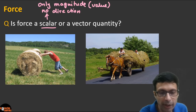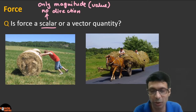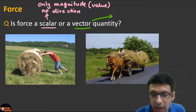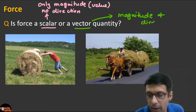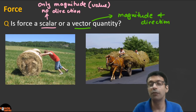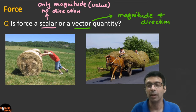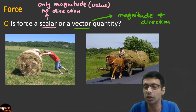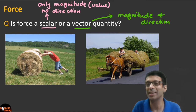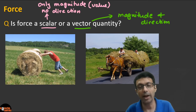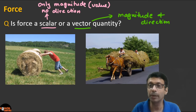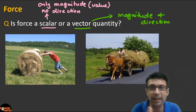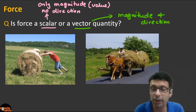A vector quantity has both magnitude and direction. For example, time — 20 seconds — is scalar because it has a value but no direction; you can't say '20 seconds north.' Mass, 5 kg, also has no direction. But velocity, like 20 m/s north, has both a value and a direction.